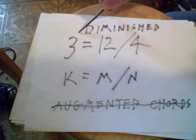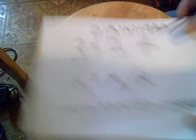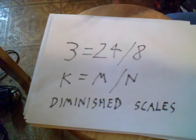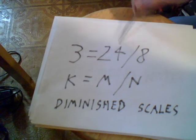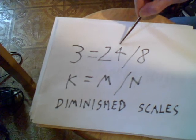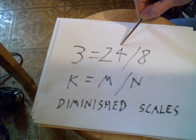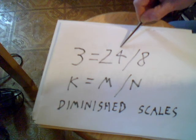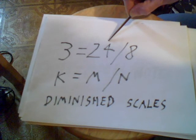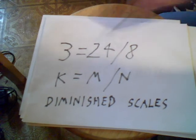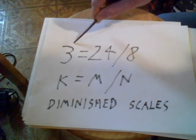We can go to the diminished scales. There's only three of those, and it's 24 divided by 8. Why 24? Because we can start whole step half step or start up with a half step. On each of the 12 notes that gives us 24. Eight into 24 gives us only three, and there's only three diminished scales.